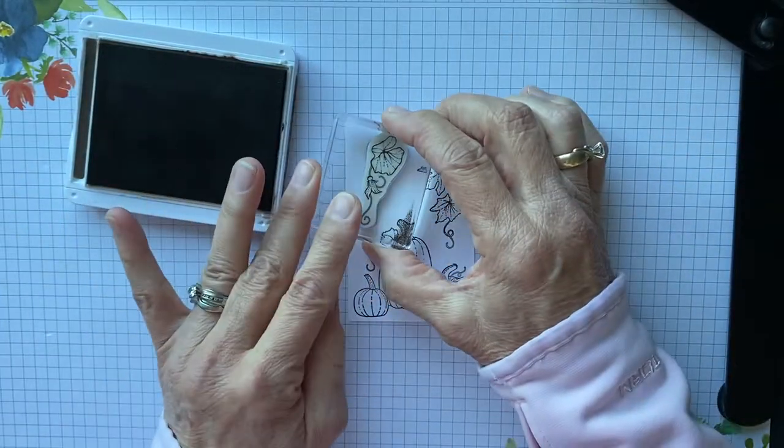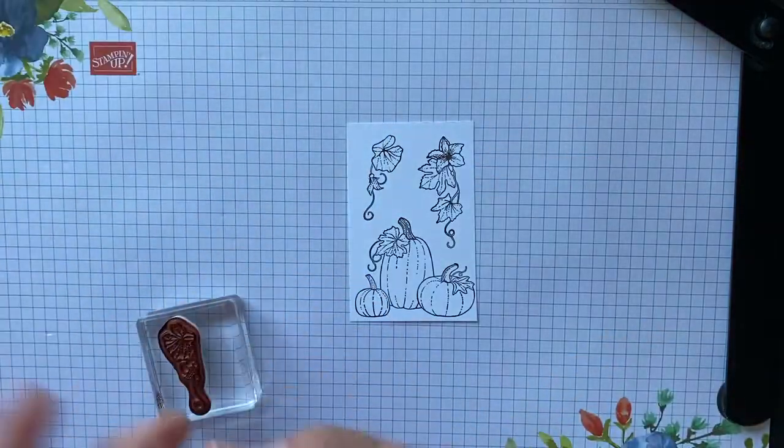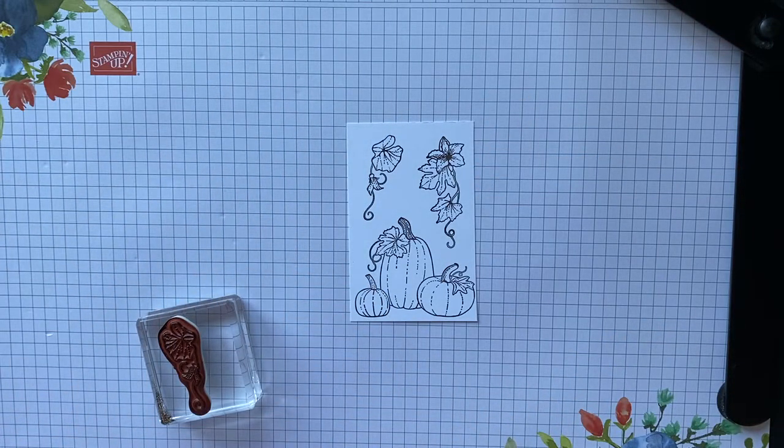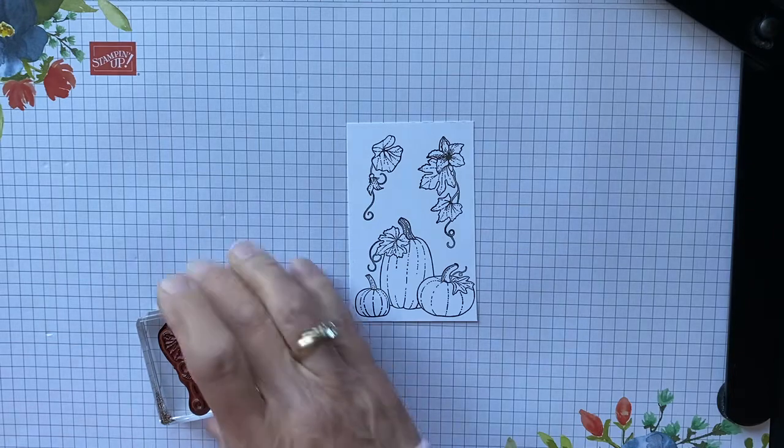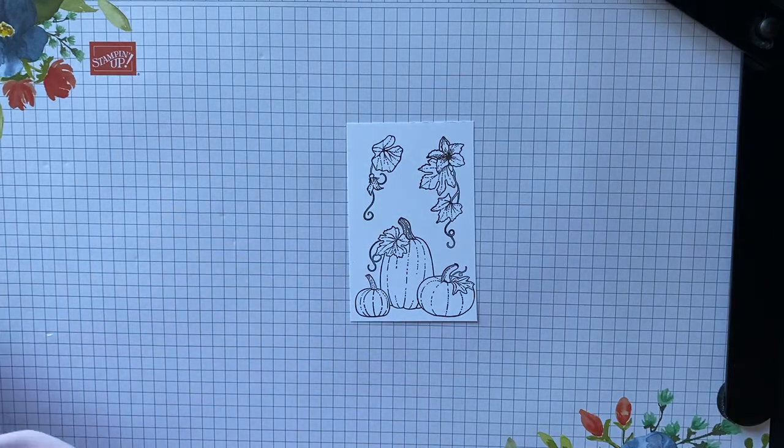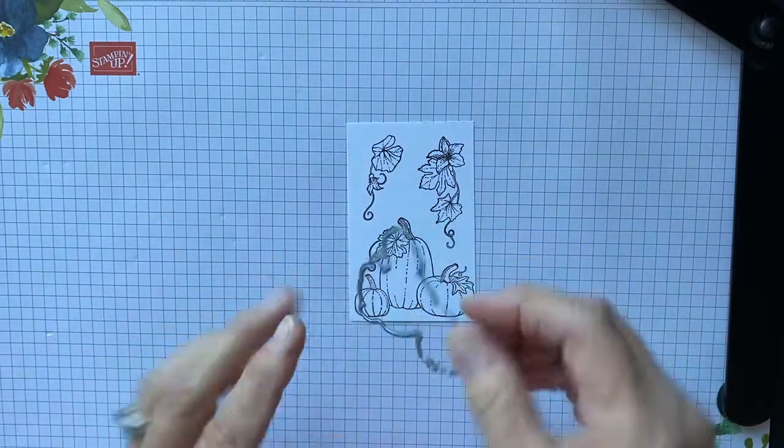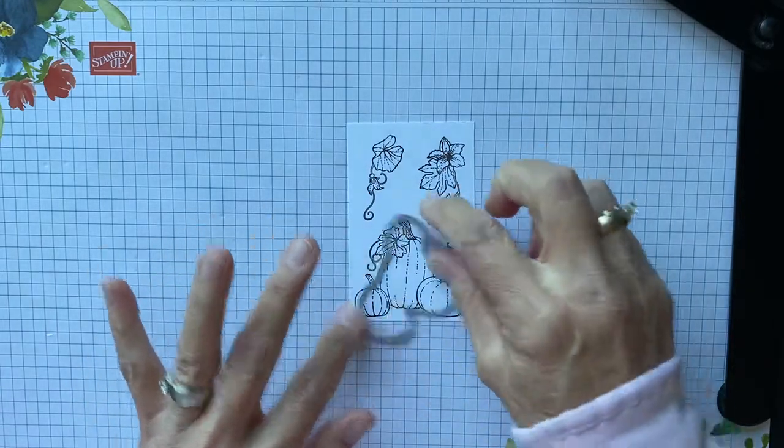And then we're going to use the dies and die cut these out. Aren't they just so pretty? I love how these stamp. So then you're going to take your dies and these line up perfectly on here like this.